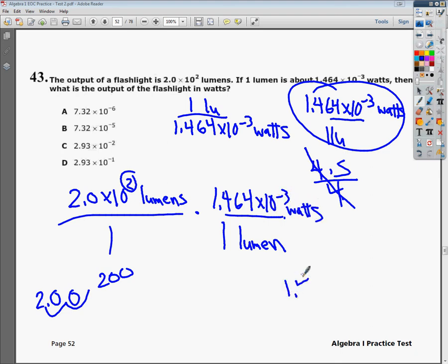Or, if I wanted to go ahead and convert it into regular normal form, I would just move this to the left 1, 2, 3. So, it would end up with 0.001464. That's fine too, but I don't really need to bother with that. And as you can see at this point, it becomes a multiply question. These lumens cancel. So, I can go into my calculator.